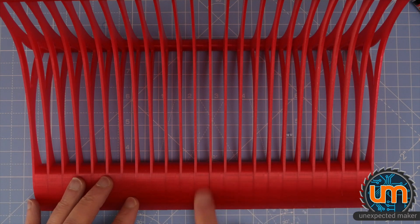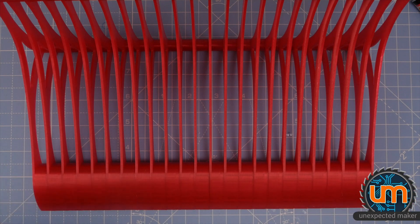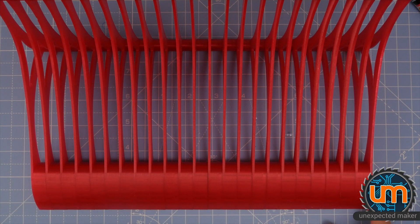So as I mentioned, these front sections are for labels. And so what I'm going to do is print up some example labels to put on here and show you how they work.